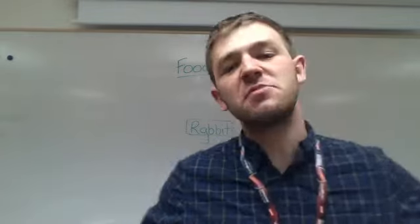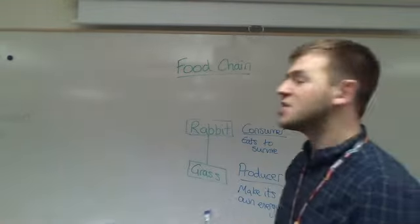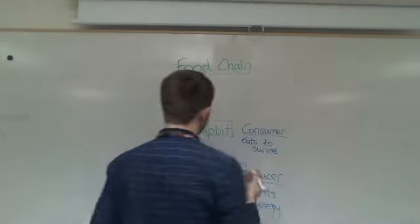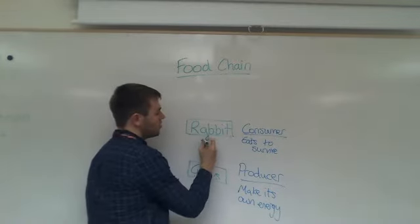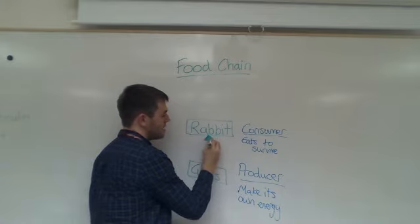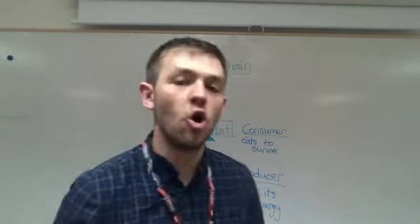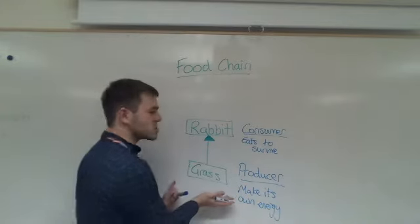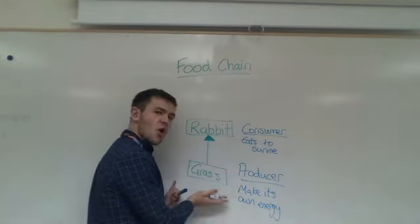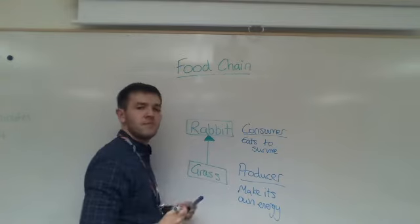Grass to rabbits — this is the most simple type of food chain. The grass is eaten by the rabbit. The energy in my food chain always goes up. The producer is always at the bottom, and then things go up from there.